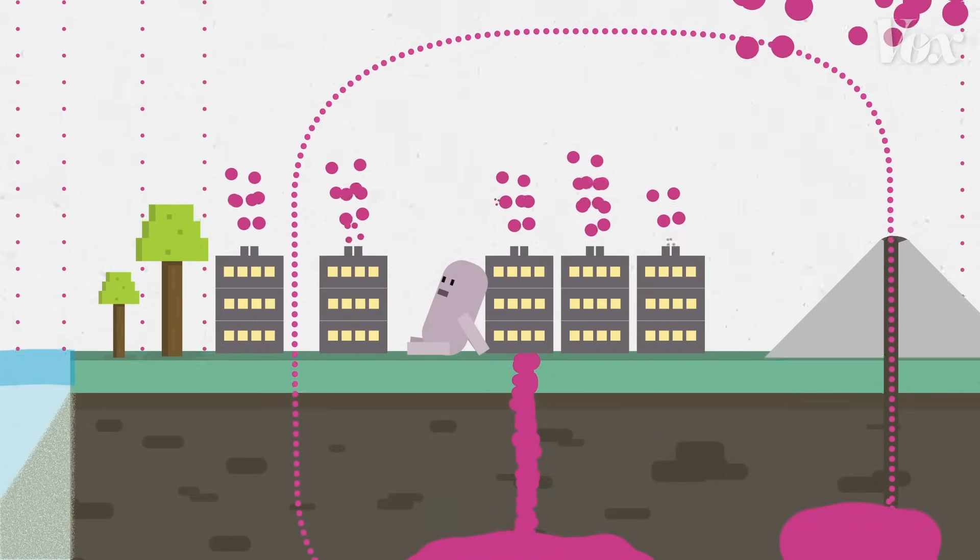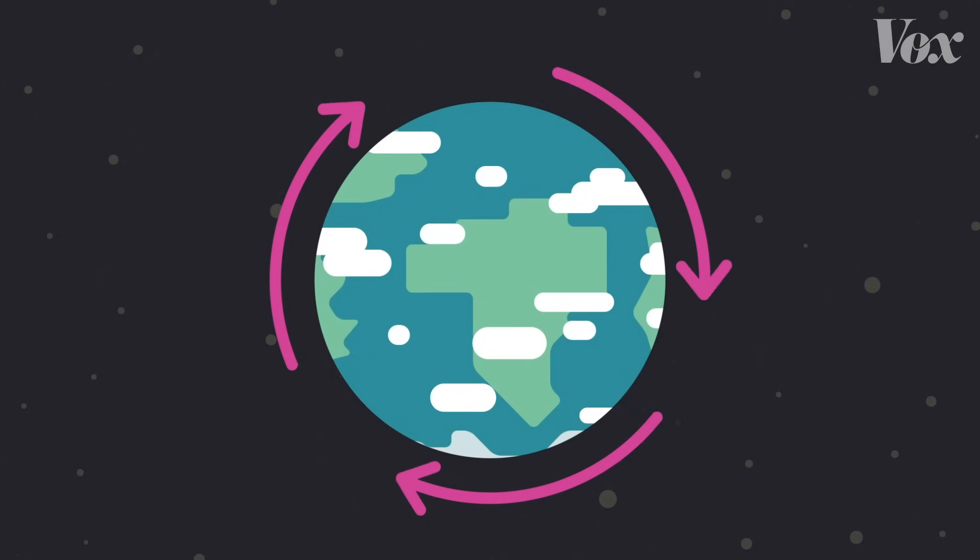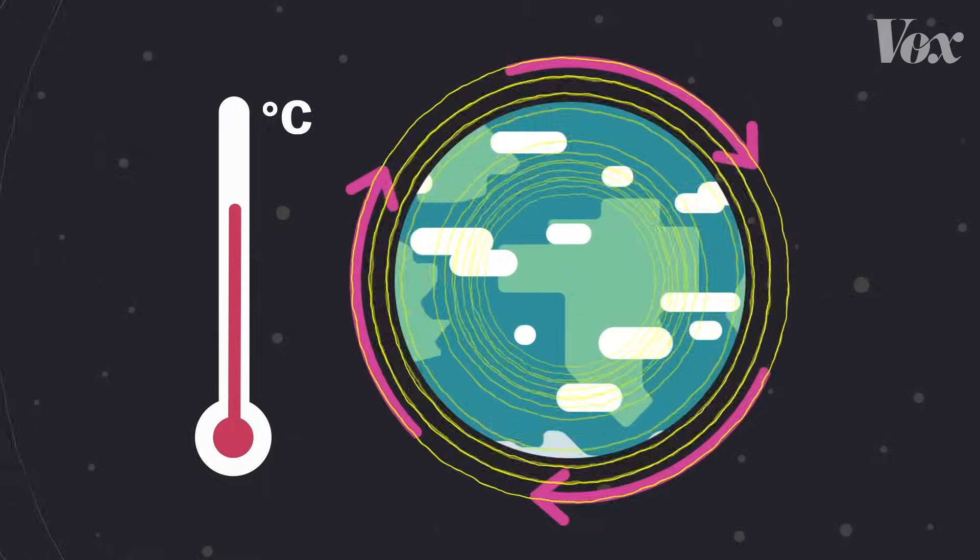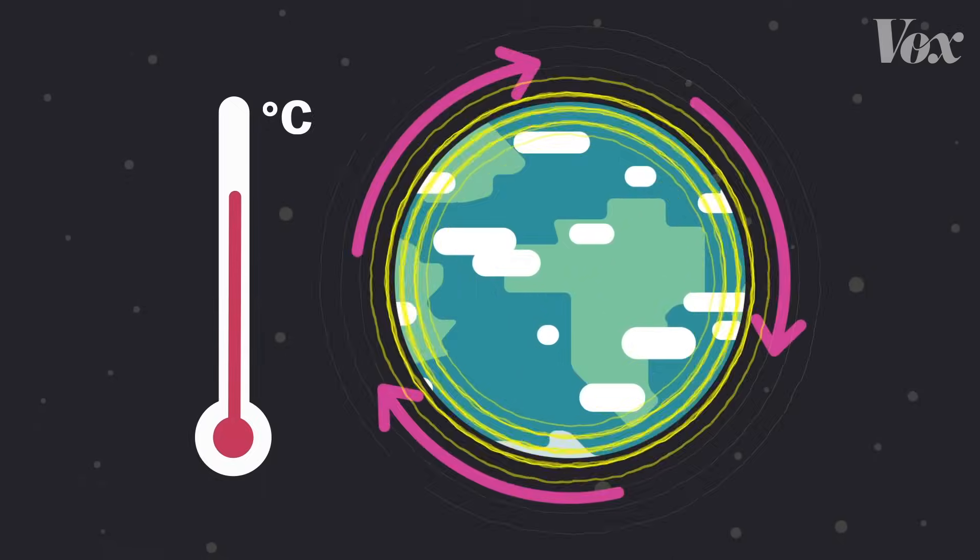Too much carbon was being put into the atmosphere. Heat that would normally be able to escape bounced back and stayed on Earth. And Earth started to get warmer and warmer.